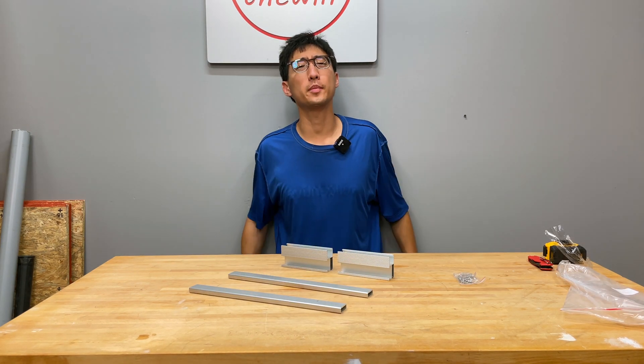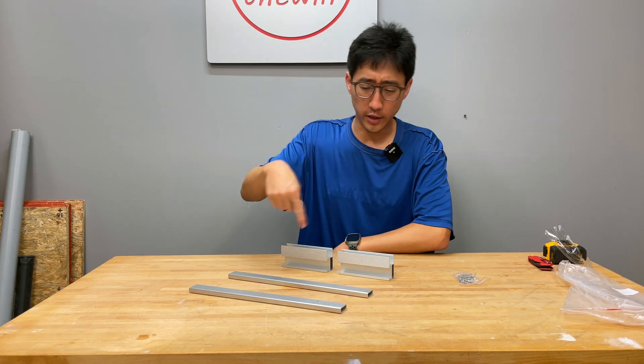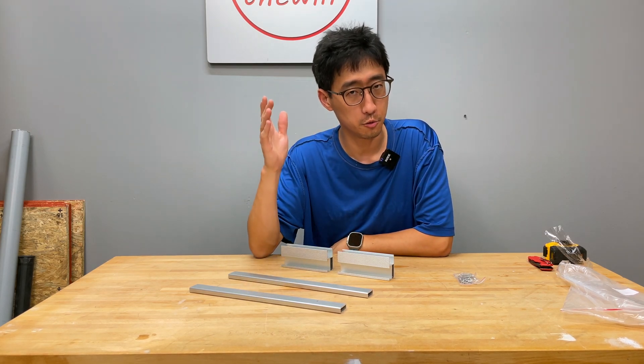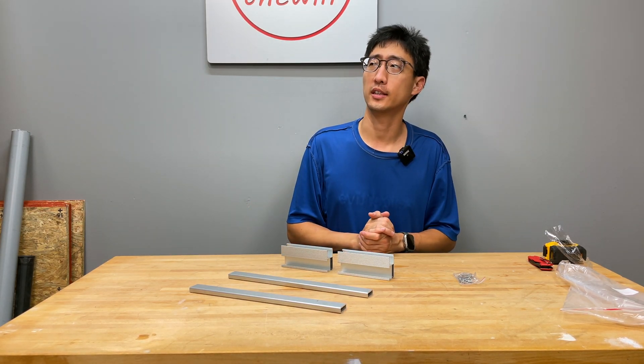Hey, what's up guys? Welcome back to the channel. In today's episode, we're going to be talking about these. These right here are pieces of aluminum that you get in the EG4 Bright Mount extension kit.